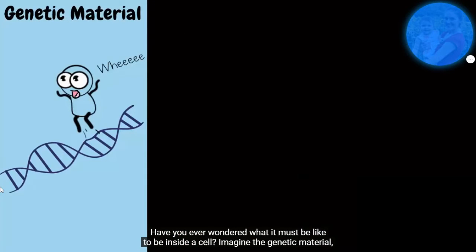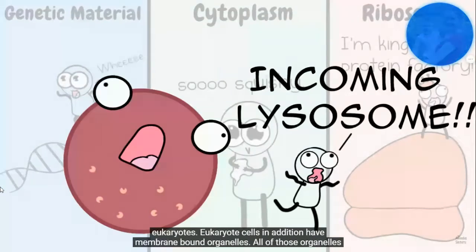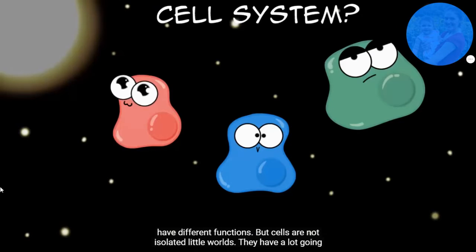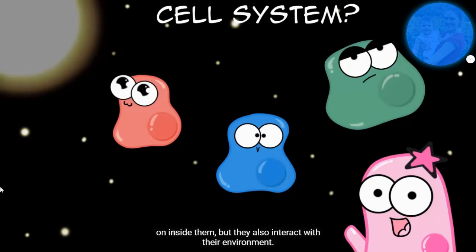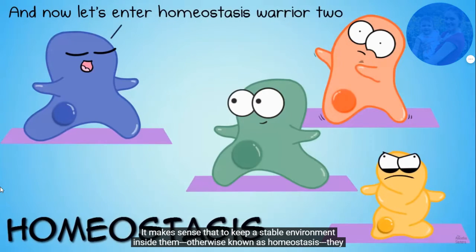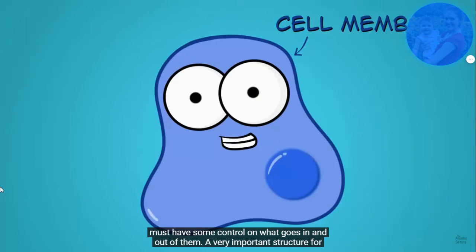Have you ever wondered what it might be like to be inside a cell? Imagine the genetic material, the cytoplasm, the ribosomes. You'll find those in almost all cells, prokaryotes and eukaryotes. Eukaryote cells, in addition, have membrane-bound organelles. All of those structures and organelles have different functions, but cells are not isolated little worlds. They do have a lot going on inside them, but they also need to interact with their environment. It makes sense that to keep a stable environment inside themselves, otherwise known as keeping homeostasis, they must have some control on what goes in and what goes out of them.